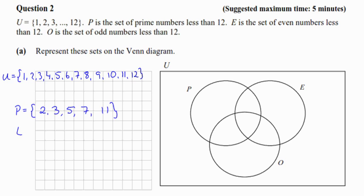Our next set is E. E is the set of even numbers less than 12. So the even numbers are 2, 4, 6, 8 and 10. We don't include 12 because it says less than 12.